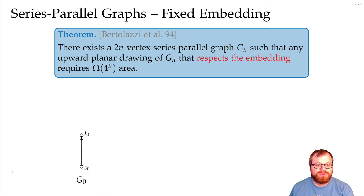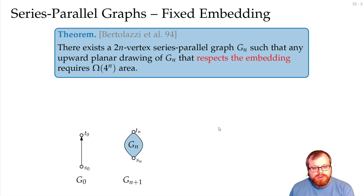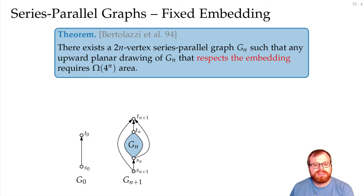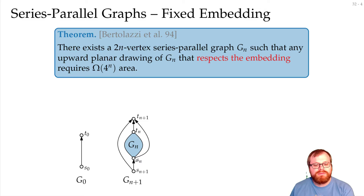How do we build this graph? In the base case, G₀ is just an edge. If we already created some graph Gₙ, then we can build Gₙ₊₁ from it by adding two more vertices — the new source sₙ₊₁ and a new target tₙ₊₁ — and we add four edges: from the source to the old source and to the new target, from the old source to the new target, and from the old sink to the new sink.